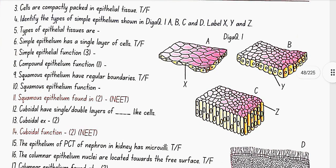Types of epithelial tissues are simple and compound. Simple epithelium has a single layer of cells. Yes, this is true.